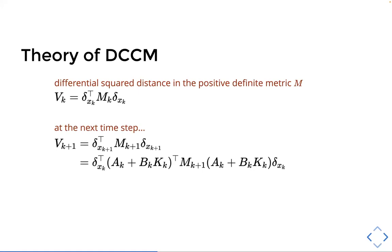So now we can consider this differential square distance in the positive definite metric M, which we denote VK. And if we think about the next time step, and we substitute in the values of delta XK plus one, then we get our contraction condition, where if this is enforced, it's kind of similar to like a negative definite Lyapunov function, where if this is enforced, then basically it means that the system is contracting.